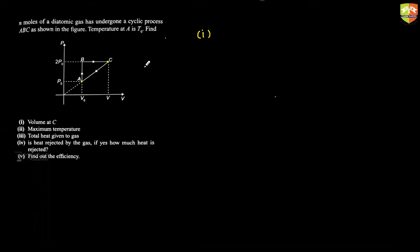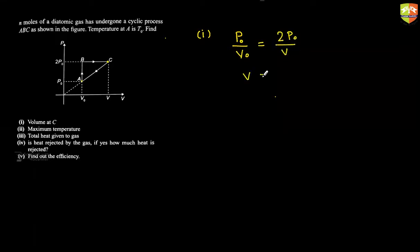To find the volume at C, is there a way point A is related to point C? Notice that C to A is a straight line passing through the origin, so the slope must be constant. Slope equals P/V, so P₀/V₀ = 2P₀/V_C, which gives V_C = 2V₀.